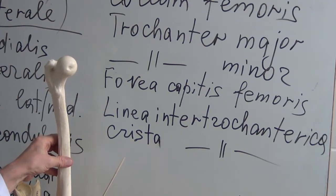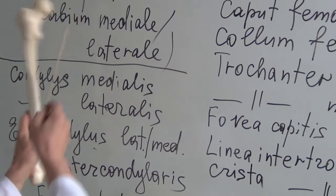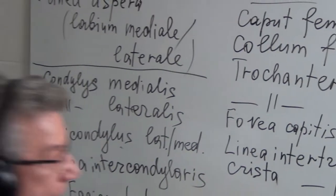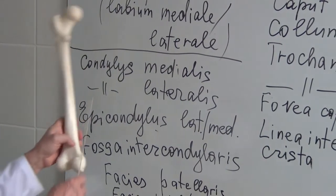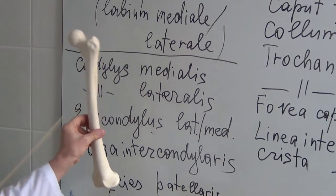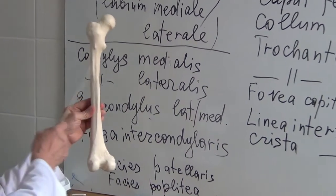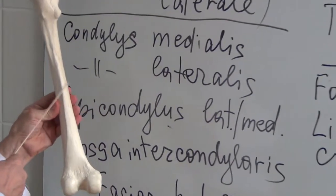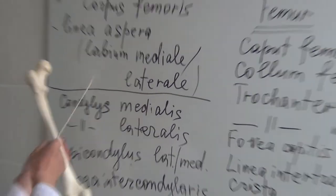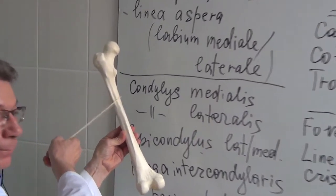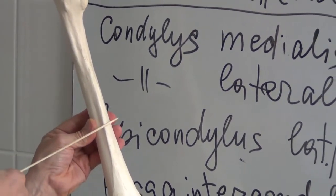Now let us discuss the structures found on the corpus femoris, from both the anterior and posterior sides. On the posterior side we can find the linea aspera, here on the posterior surface of the femur.